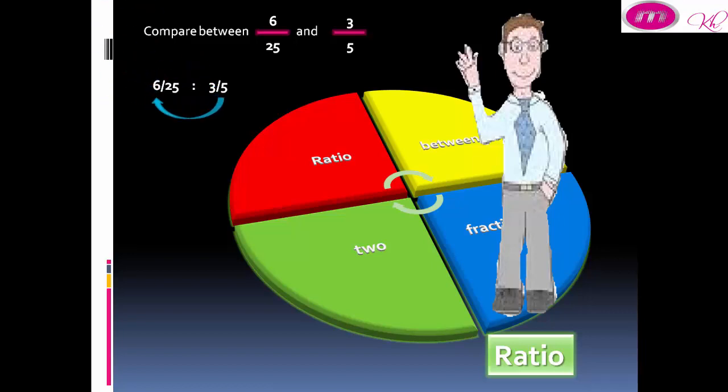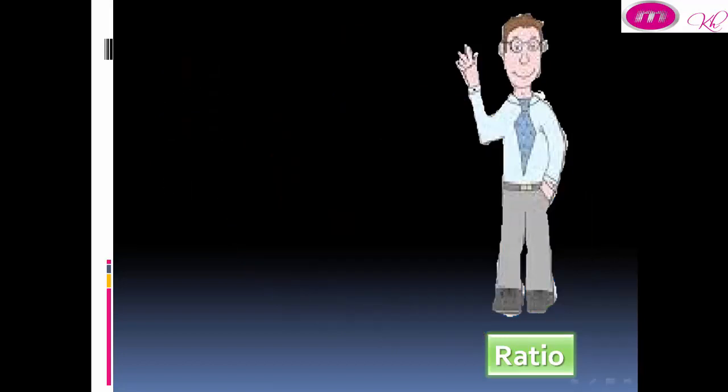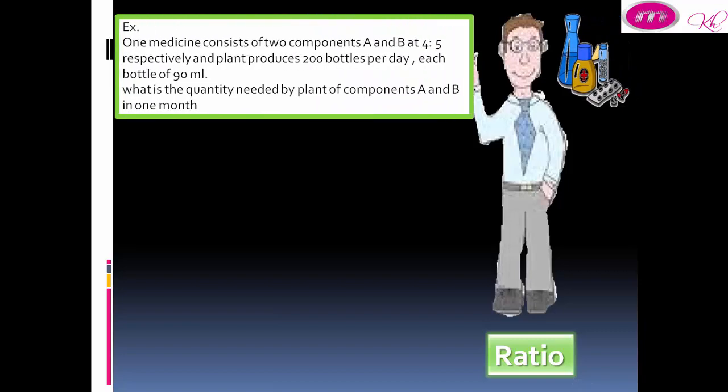We multiply the numerator in the first term by the denominator in the second term. 6 by 5 equals 30, 25 by 3 equals 75, 30 to 75 divided by 15 equals 2 to 5.